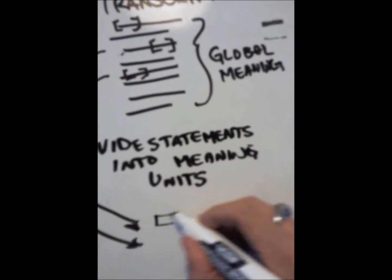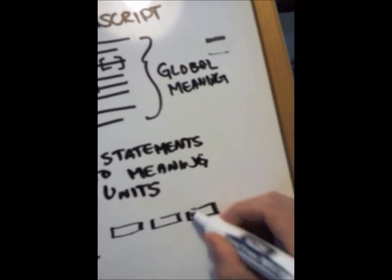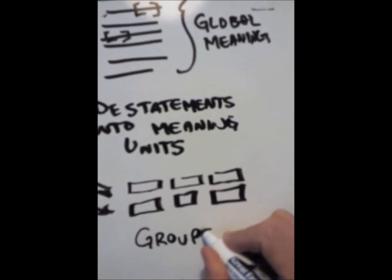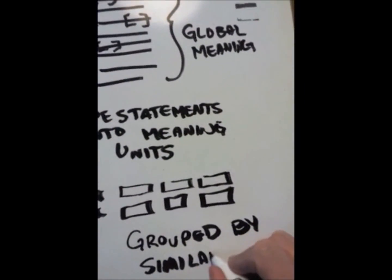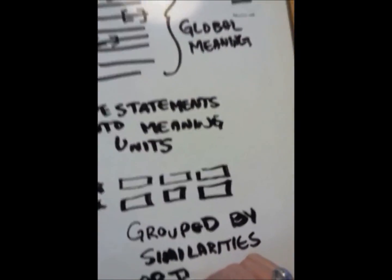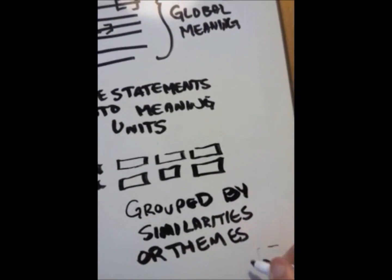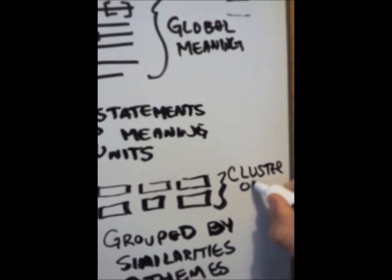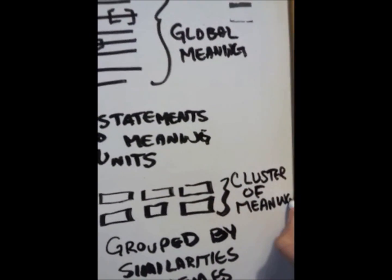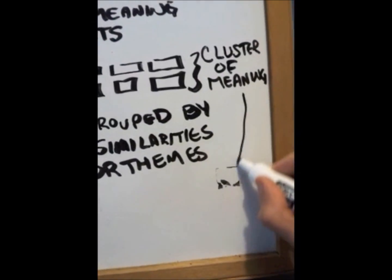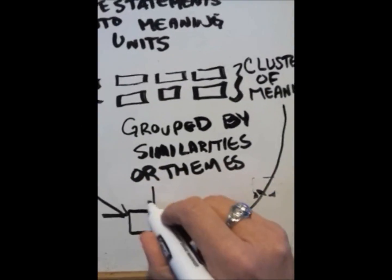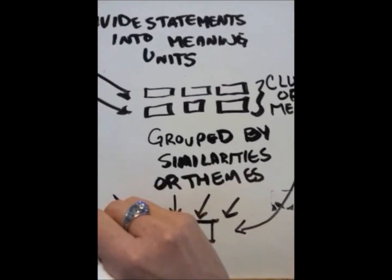These meaning units are then subjected to a process called free imaginative variation to determine which of them is essential for, and constitutive of, a fixed identity for the phenomenon under study. The idea is to subject an experience to every variation imaginable so that one can see how far it can be stretched before it loses identity. In doing so, meanings that are not necessary to the identity of the phenomenon can be eliminated.